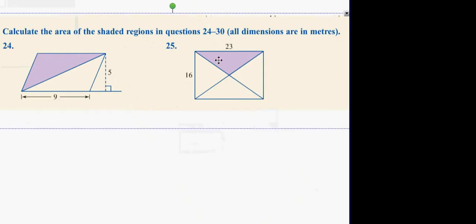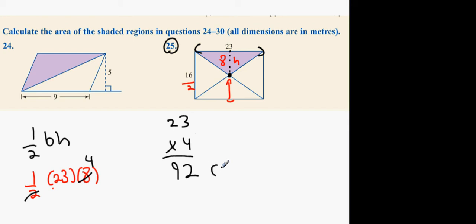We're going to calculate the area of the shaded regions in questions 24 to 30. All dimensions are in meters. We're going to do number 25 first. The formula for a triangle is a half base by height. The base is 23. We have to figure out the height. But the full way down is 16, so if we divide 16 by 2, we find out the height is 8. It's going to be a half 23 times 8, or 4 times 23. 92. 92 meters squared.